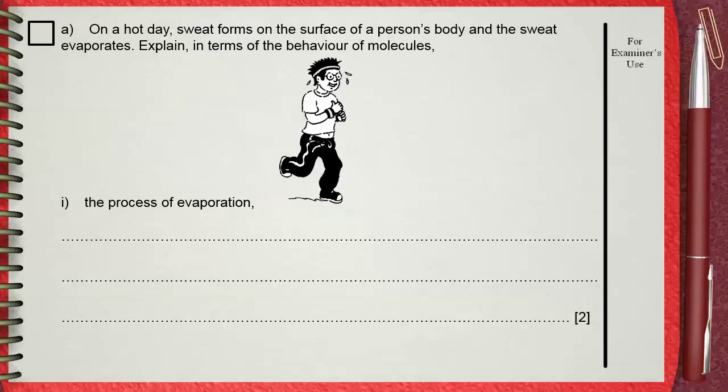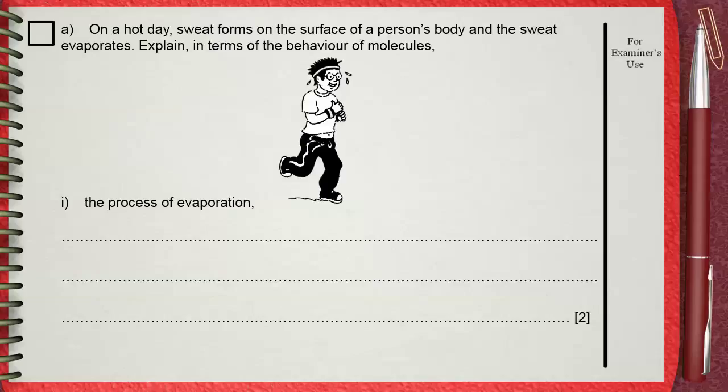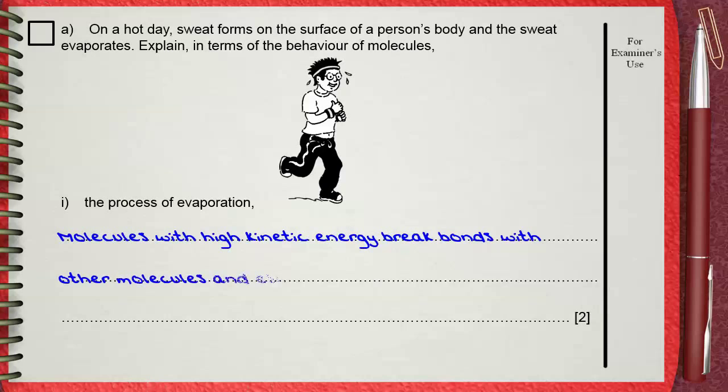The process of evaporation. We discussed the idea of evaporation before, and we said the most important thing about evaporation is how to explain it according to the kinetic theory. In terms of molecules, we explain it as molecules with high kinetic energy break bonds with other molecules and escape from the surface, changing from liquid to gas.